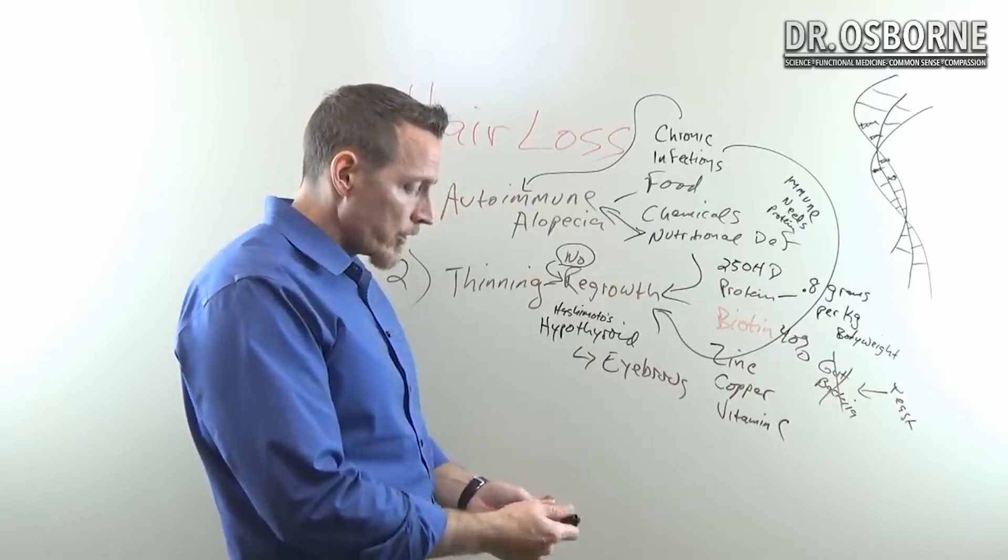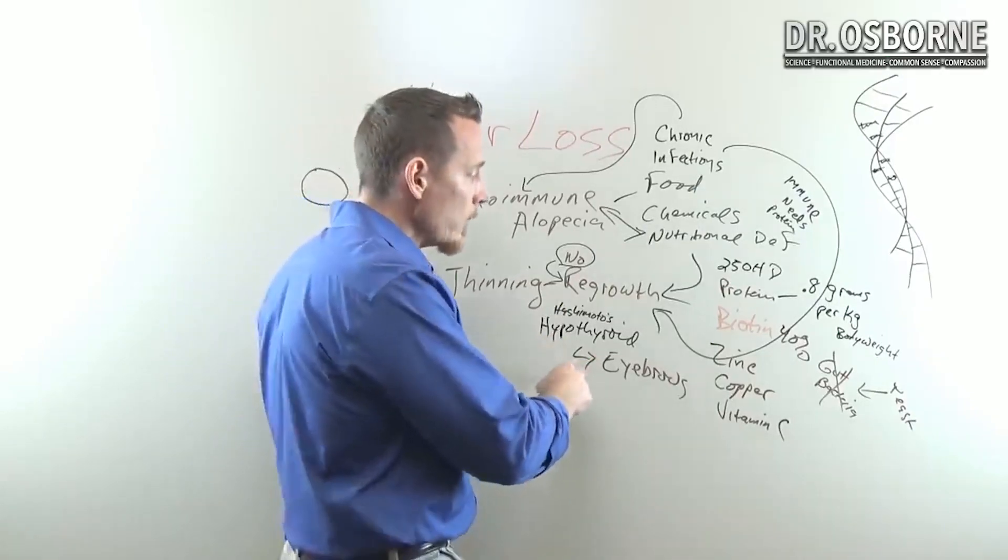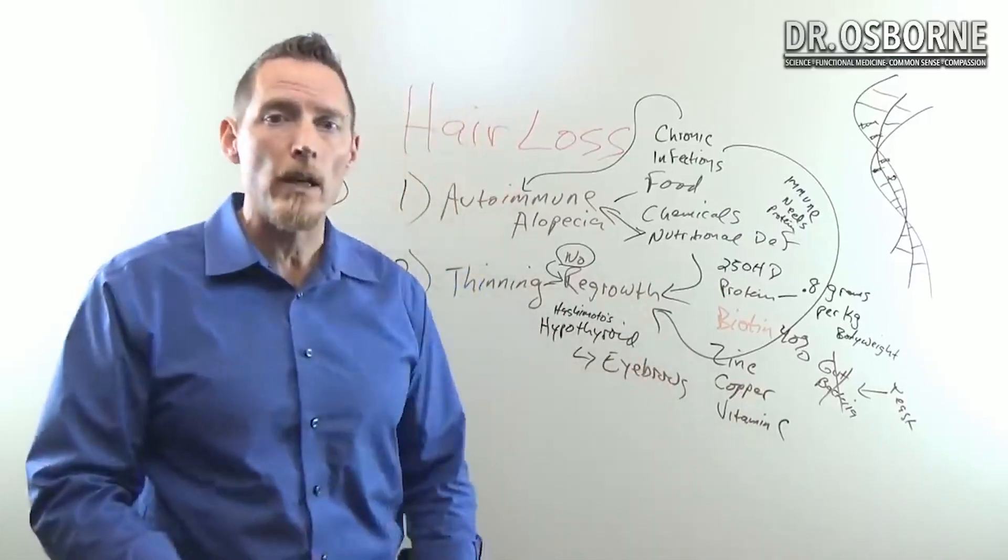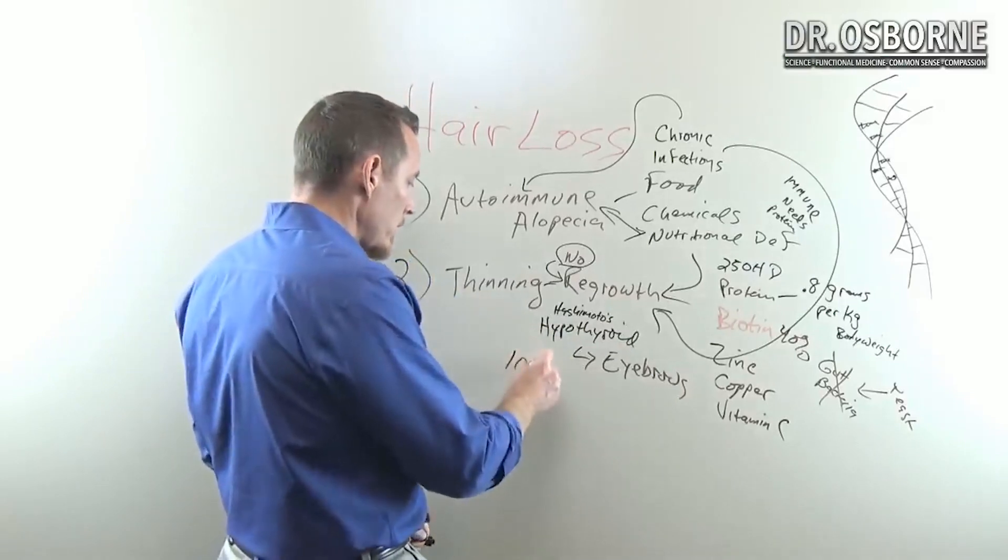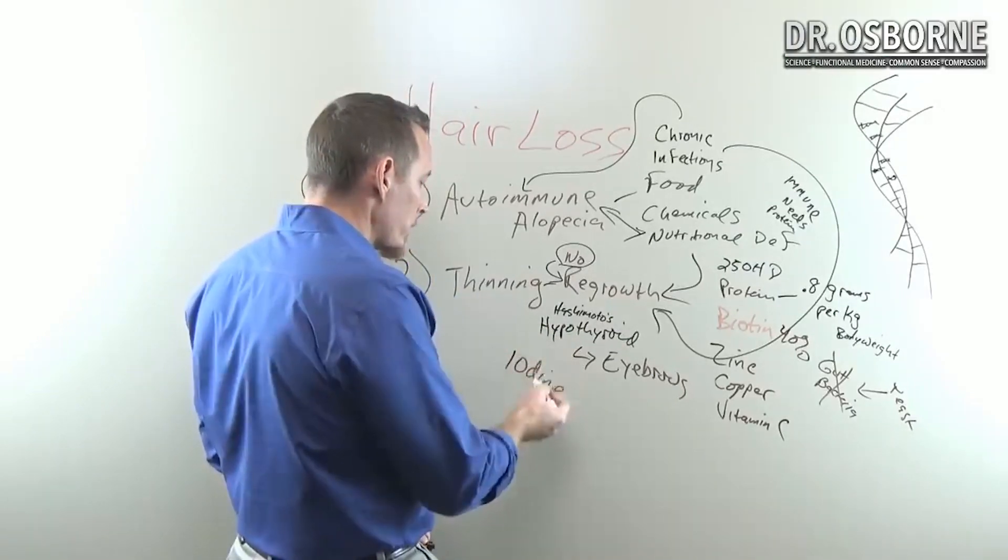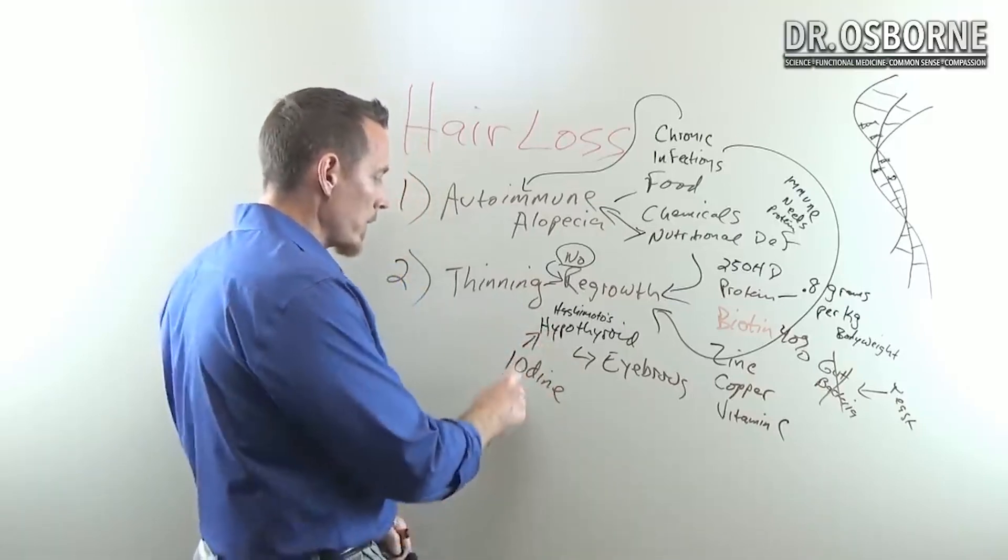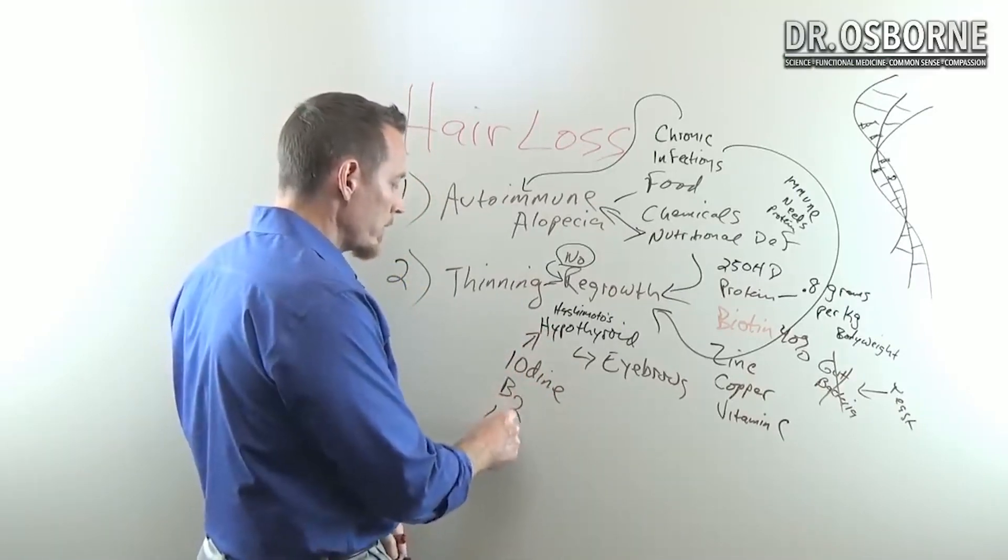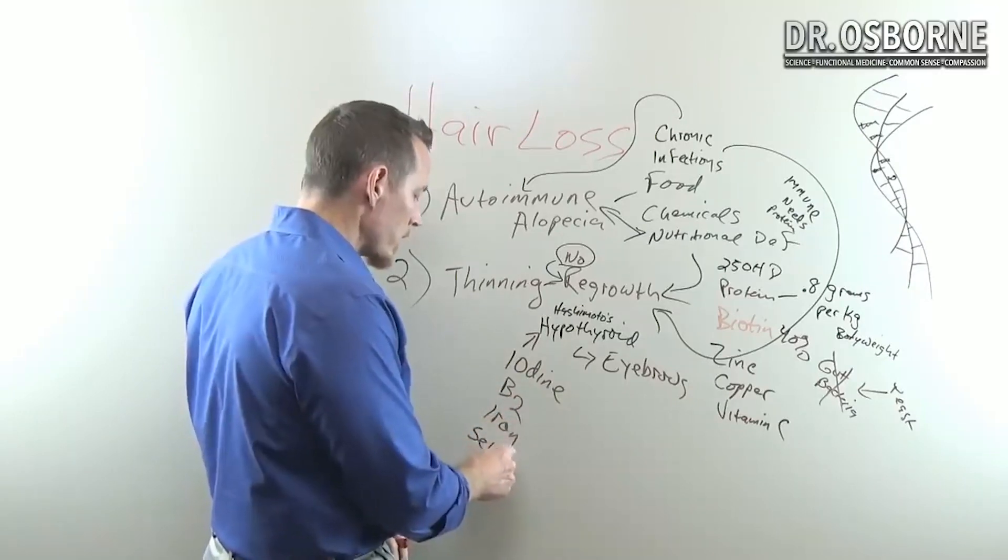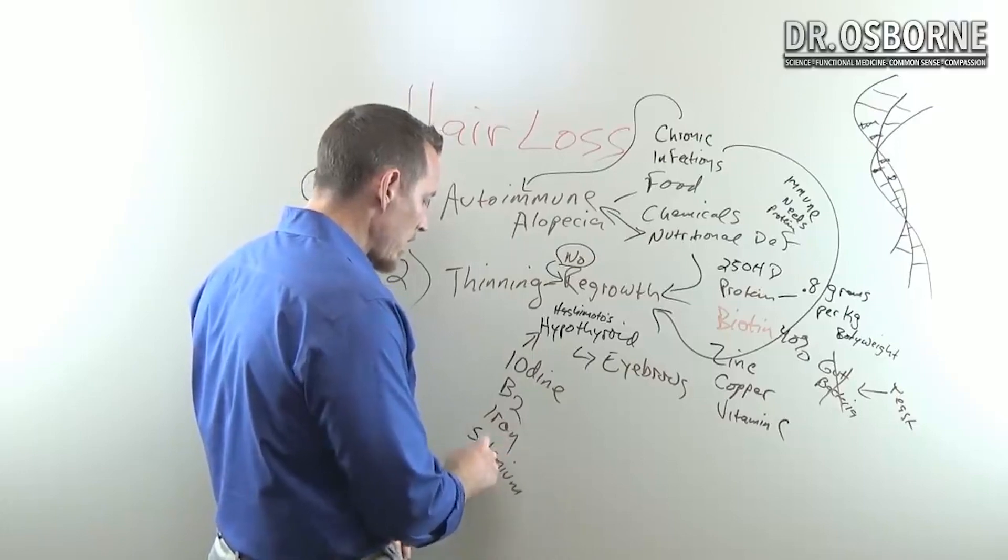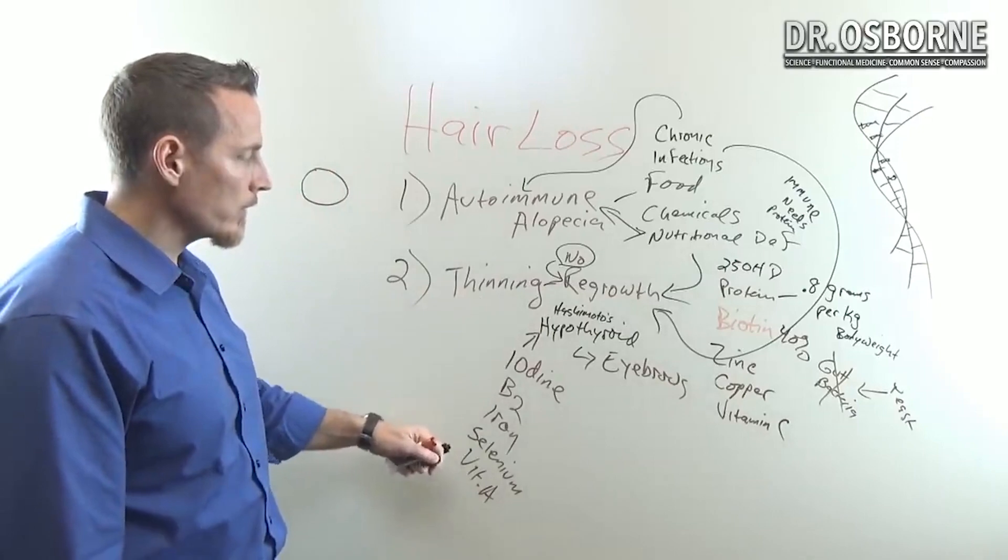But there are deficiencies that can cause your thyroid not to work, and when your thyroid doesn't work you have hair loss. So it's indirect. For example, iodine is necessary for your thyroid to properly work. If you don't have enough iodine, you can develop hypothyroidism. Vitamin B2 can do this, iron deficiency can do this, so can selenium deficiency, so can vitamin A deficiency.